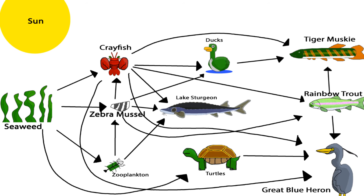Besides the pyramids, a food web also exists. A food web is made up of food chains. A food chain is only one path an animal takes to find food. All food webs consist of heterotrophs and autotrophs, also known as consumers and producers.